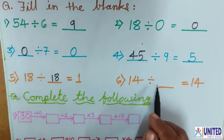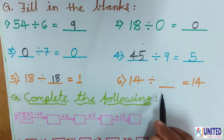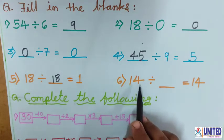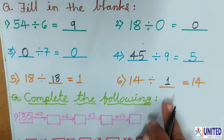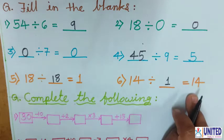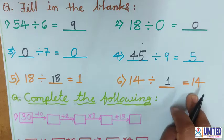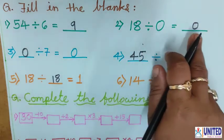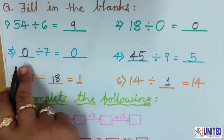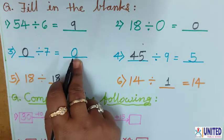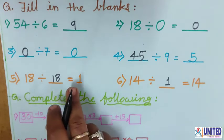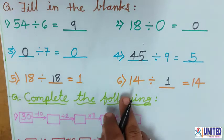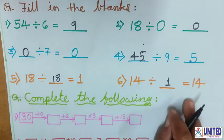Now number 6: 14 divided by blank equals 14. Again the divisor is missing. If the dividend and quotient are the same, that means divisor is 1. So if we divide any number by 1, the answer is that same number. You have to remember these rules: if we divide any number by 0, the answer is always 0; if we divide 0 by any number, the answer is always 0; if we divide any number by the same number, the answer is always 1; and if we divide any number by 1, the answer is that same number.